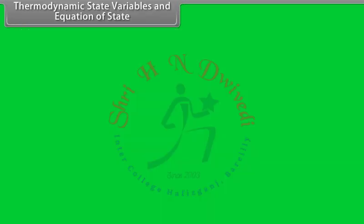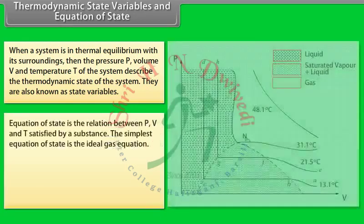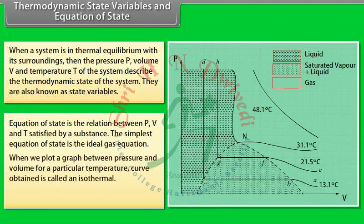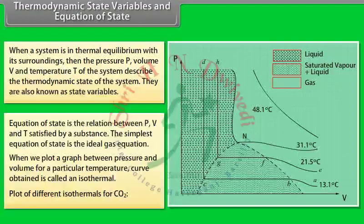When a system is in thermal equilibrium with its surroundings, the pressure P, volume V, and temperature T describe the thermodynamic state of the system — these are called state variables. The equation of state is the relation between P, V, and T satisfied by a substance. The simplest equation of state is the ideal gas equation. A graph of pressure versus volume at a particular temperature yields a curve called an isotherm. A plot of different isotherms for CO₂ is shown in the graph.